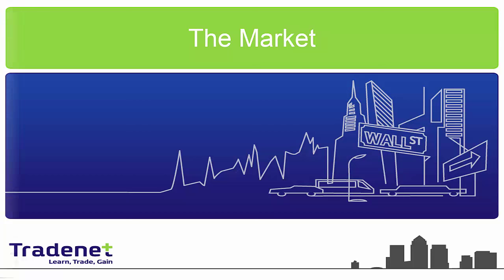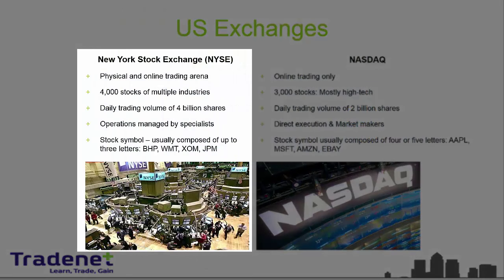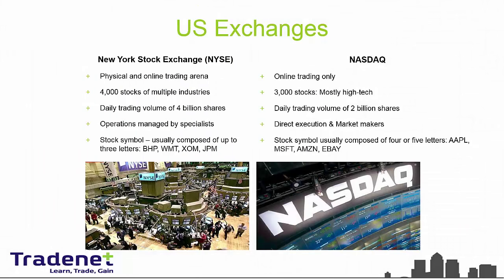We are trading the US exchanges. The biggest one is the New York Stock Exchange, where 4,000 shares are being traded. The US stock exchange symbols are usually composed of three letters — for example, BHP, WMT which stands for Walmart, XOM, and JPM which stands for JP Morgan.